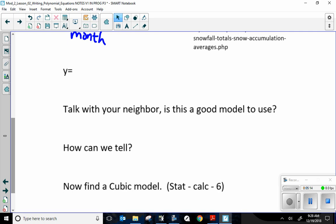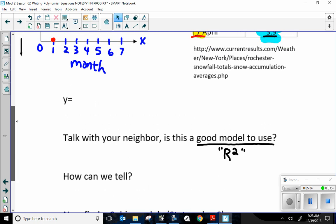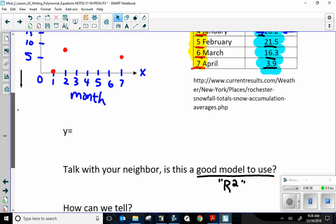So, if I want to find if this is a good model, I know I'm going to have to refer to that R2 variable. So, I'm going to make sure that I turn that on in the calculator before I even come up with my equation. So, I don't have to backtrack.